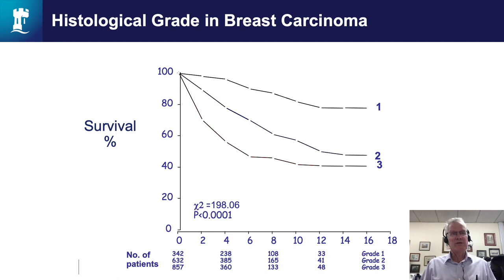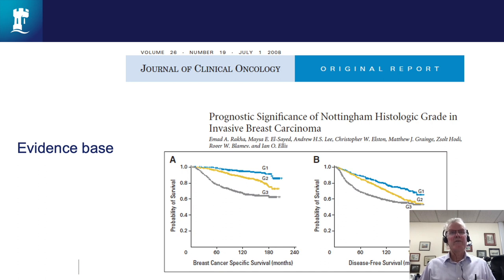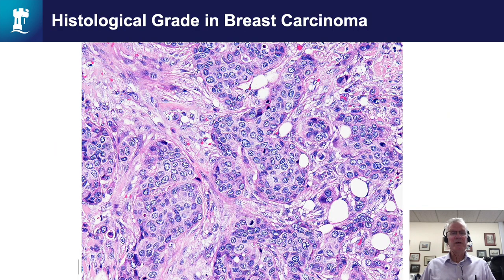By summating the three scores you can get an overall grade of one, two, or three, and this provides very powerful information on outcome. Looking at patients at ten years: approximately 45% of grade three patients are alive at ten years, whereas nearly 90% of grade one patients are alive at ten years — hugely powerful information if you follow the methodology outlined. For an evidence base, I recommend looking at a particular publication from the Journal of Clinical Oncology in 2008 which updates our data on breast cancer grading.